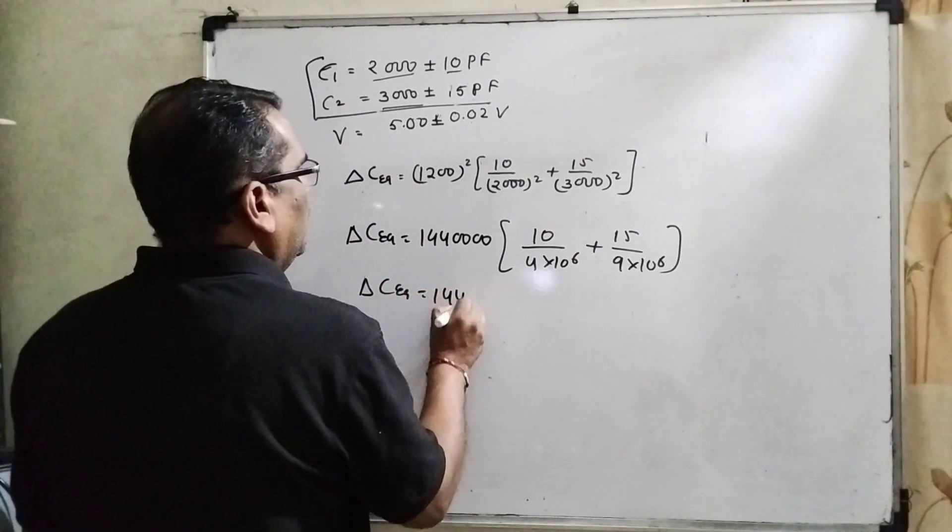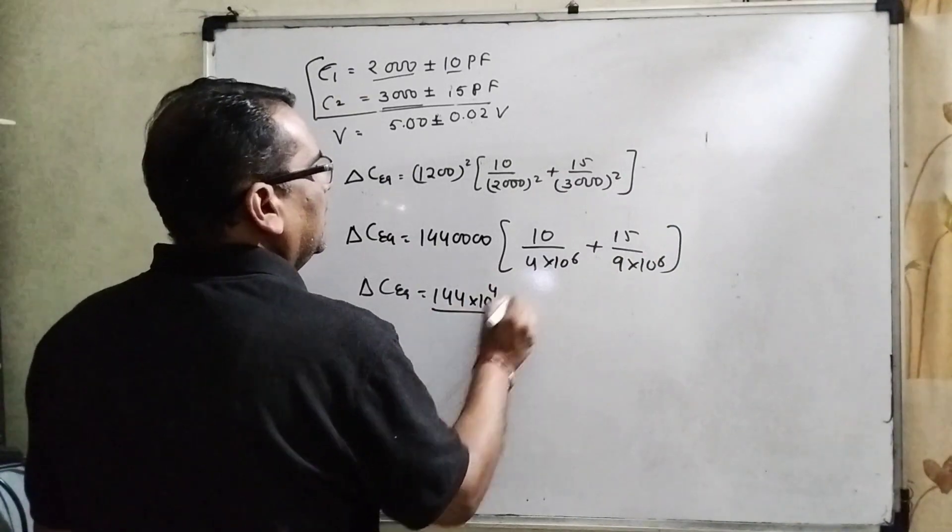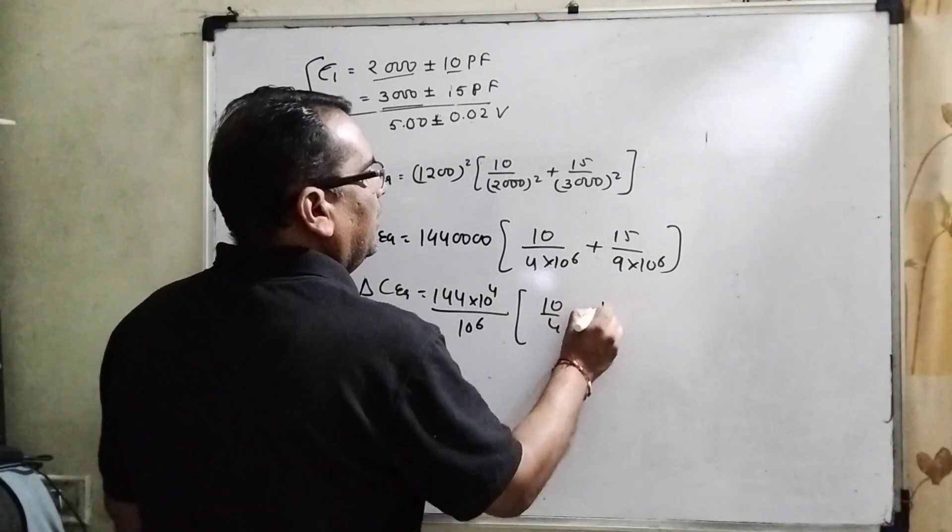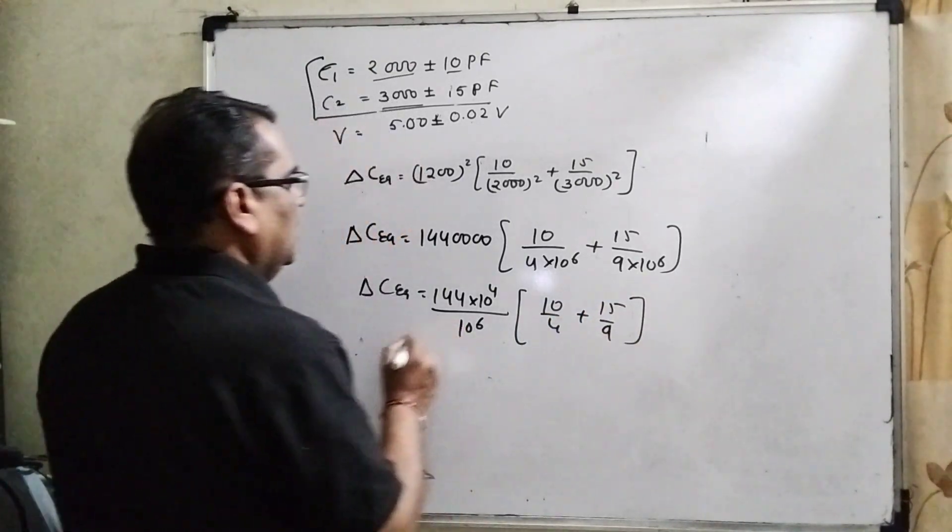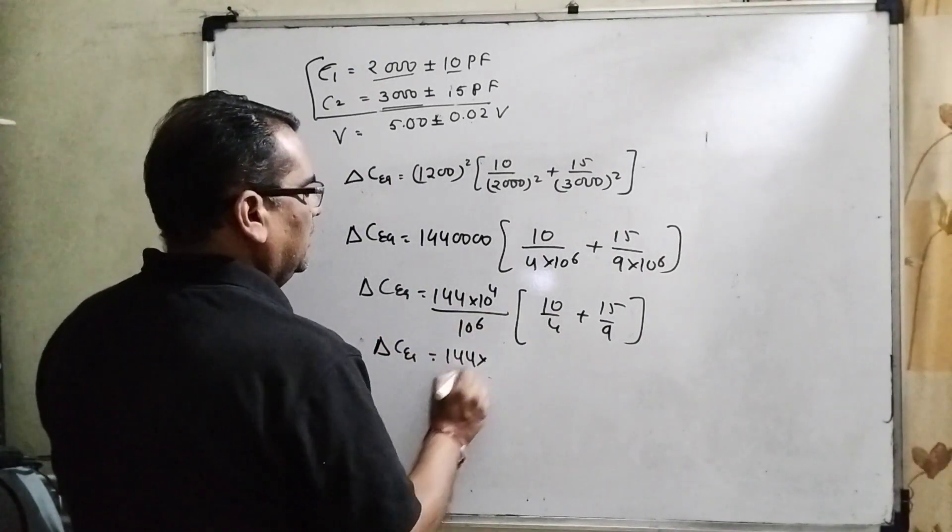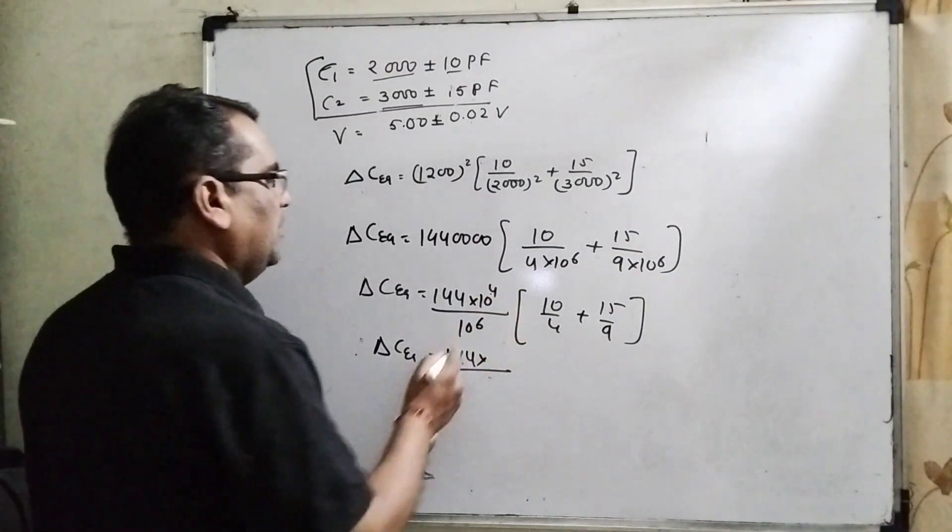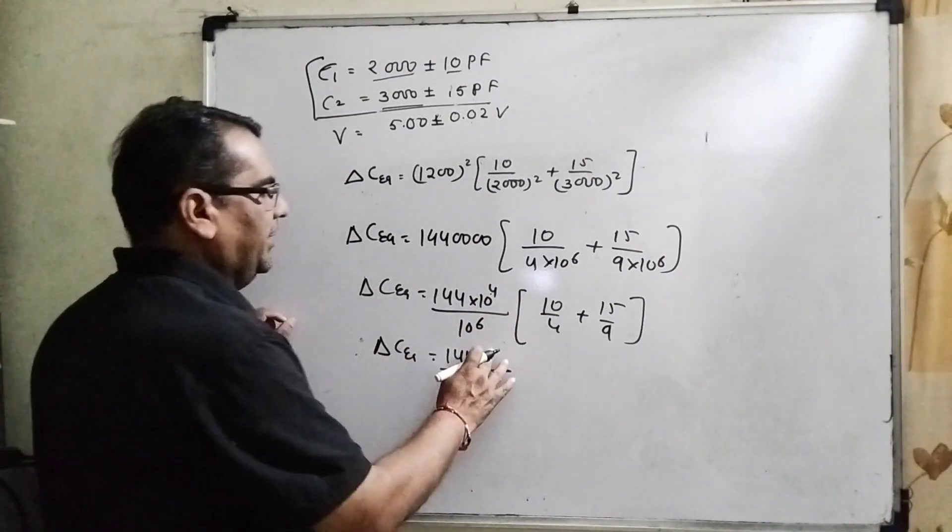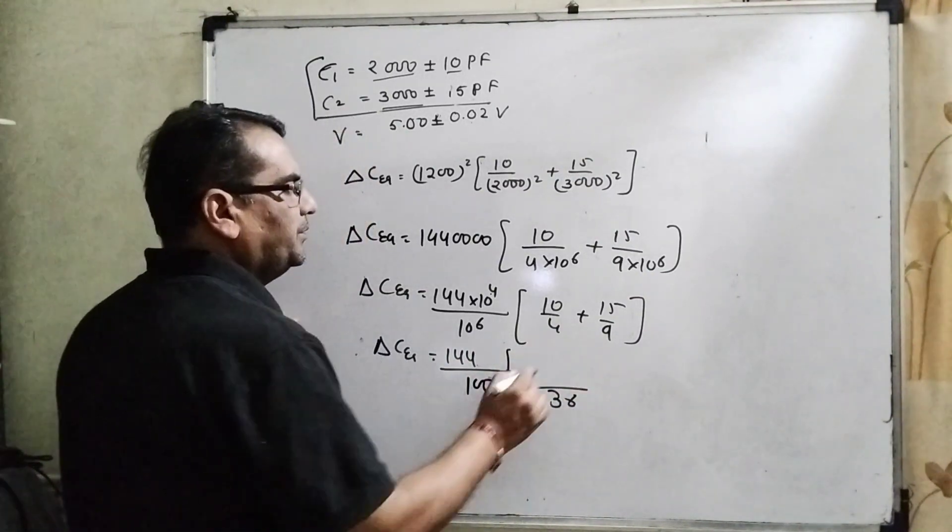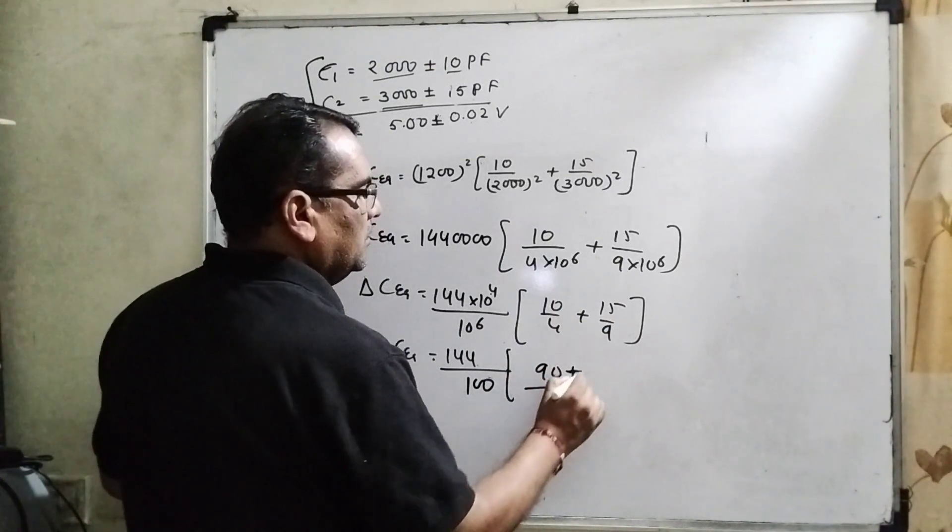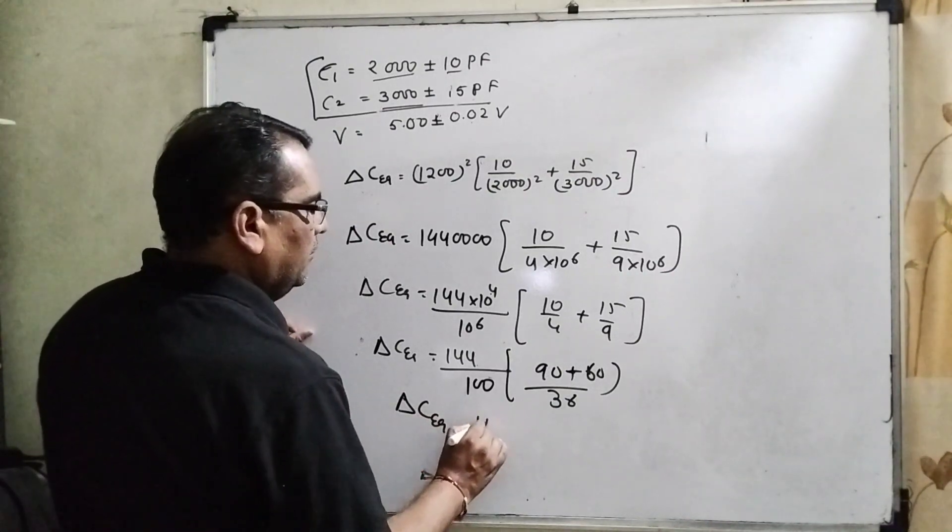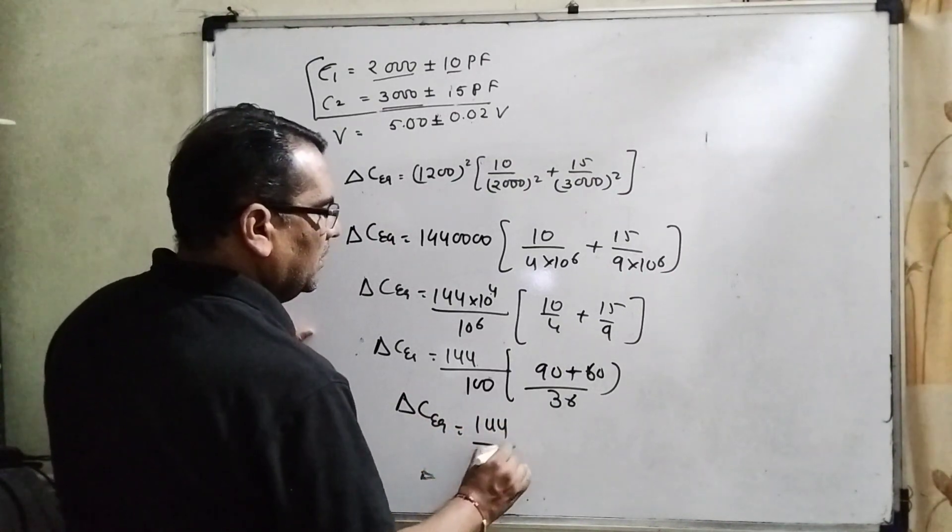Delta C_eq equals 144 times 10 to the 4. Taking 10 to the power 6 common: 10 by 4, 15 by 9. You can see 10 to the 4 and 10 to the 6 means only 100. Taking the LCM 36: 90 and 60. Delta C_eq is 144, 150 by 36.